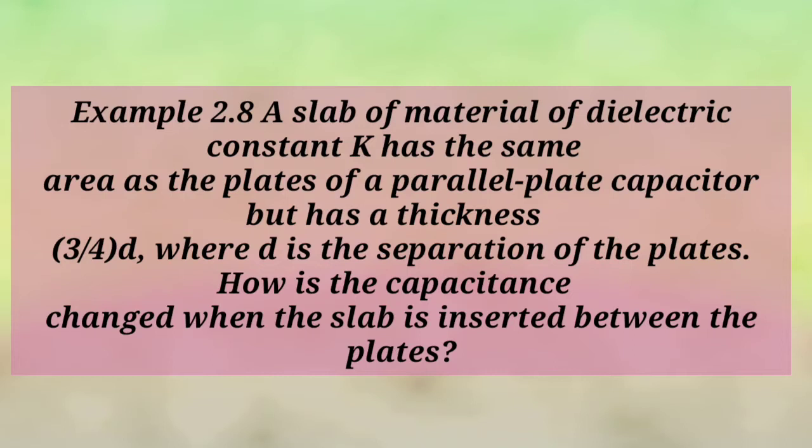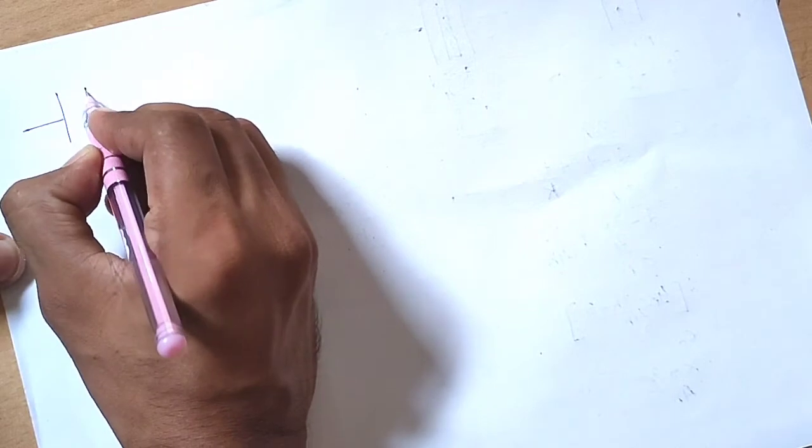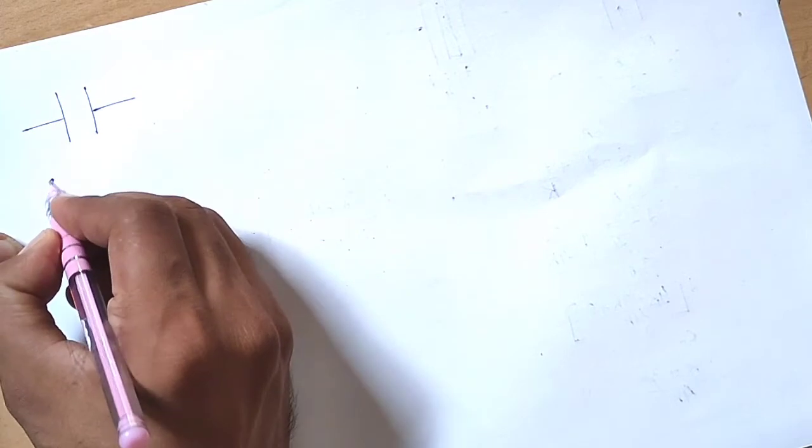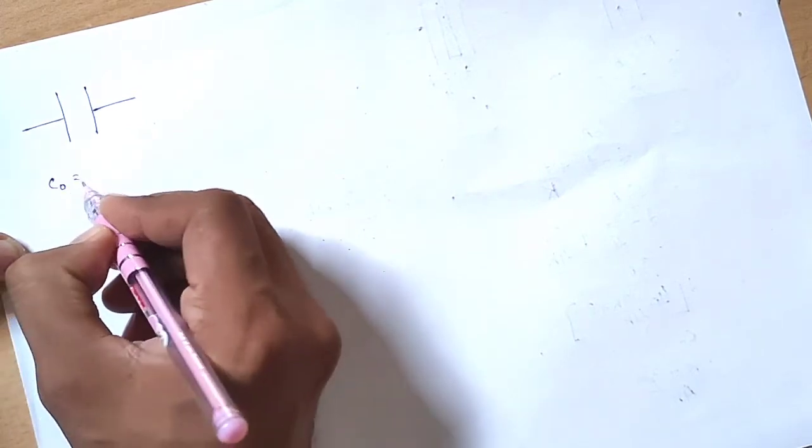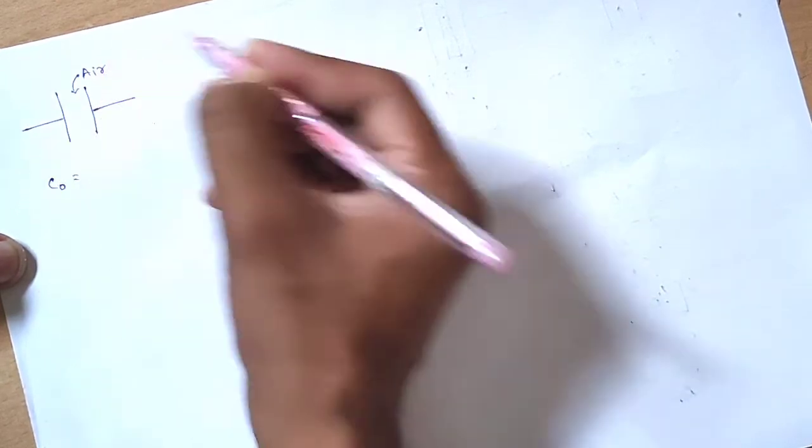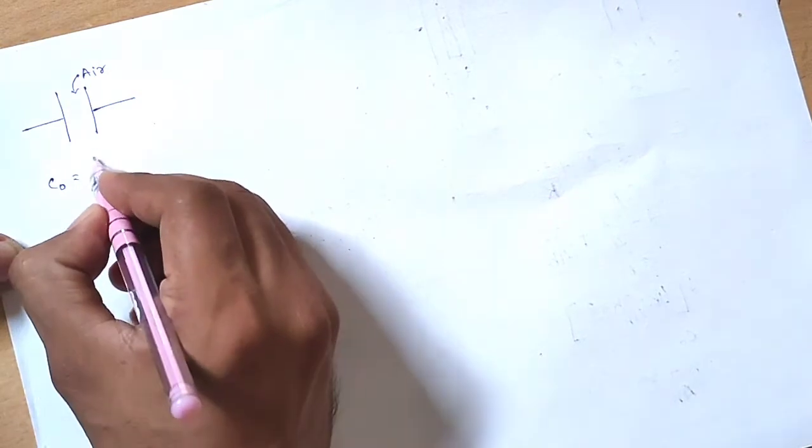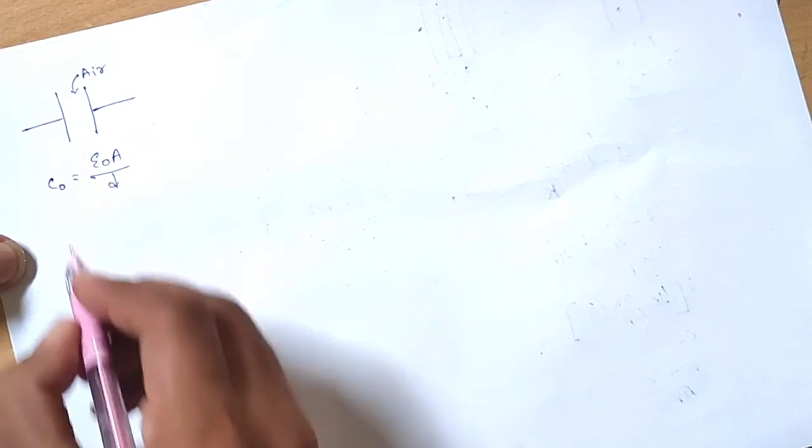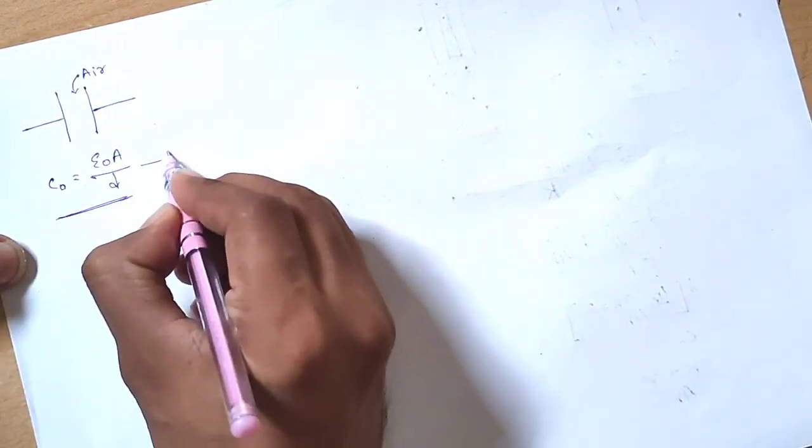In this example, we have to find out the capacitance. First, let's assume we have a capacitor. The general equation for capacitance when there is no dielectric material, only air, is C₀ = ε₀A/d. This is our equation number 1.